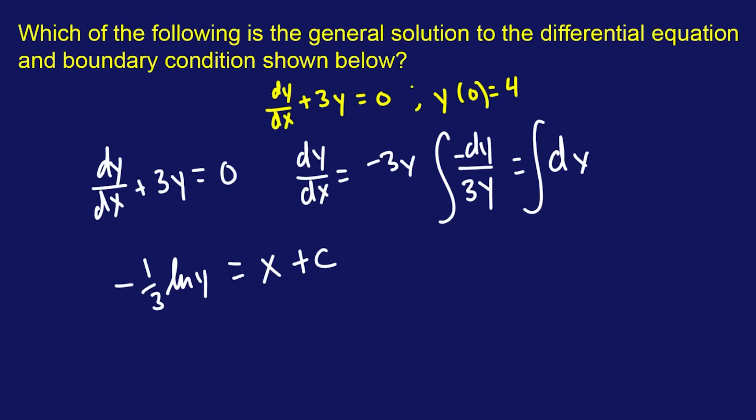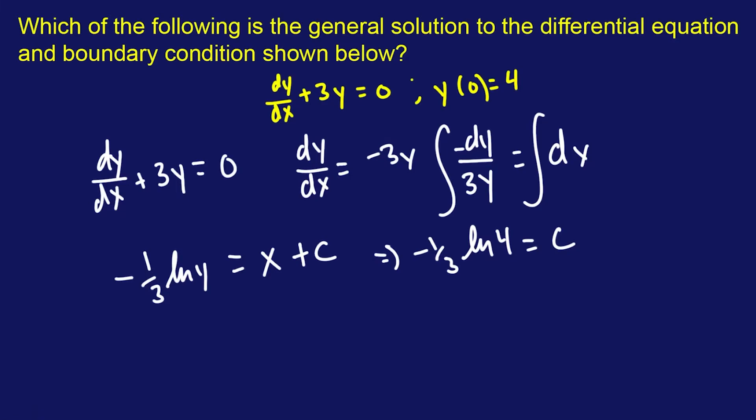Here, this is your general solution. You can leave it like this implicitly. That's fine. We're going to plug in 0 for x and y equals 4, so we can find that fancy constant. So we're going to get negative one-third ln of 4, and then we're going to set that equal to c because x is 0. So that is your solution to the constant.